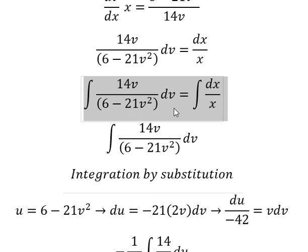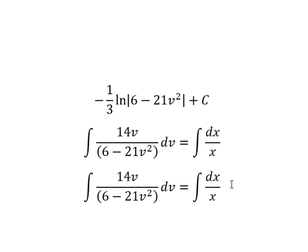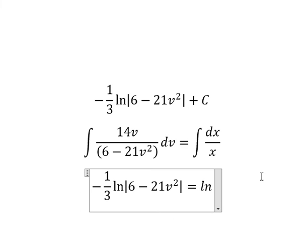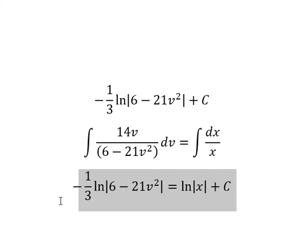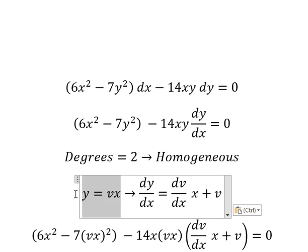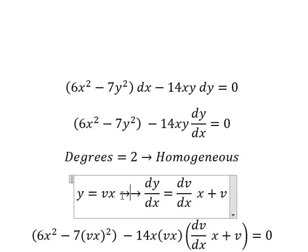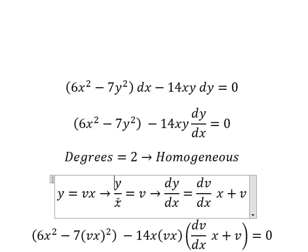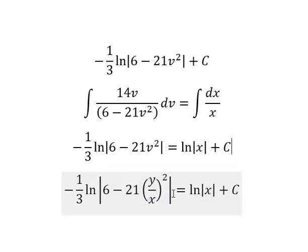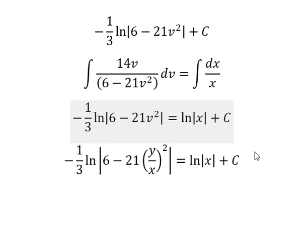Now we go back and substitute. The integral on this side gives us ln of the absolute value of s plus c. For v, that is this expression, so we divide both sides by s and then change v into y over x. This is the final answer. That is the end — thank you for watching.